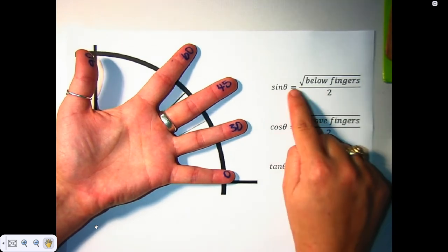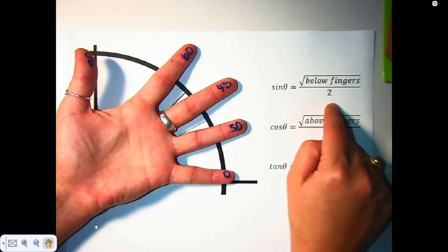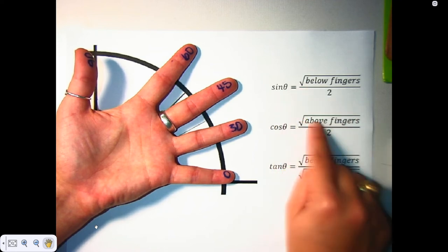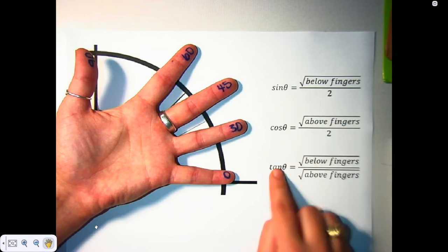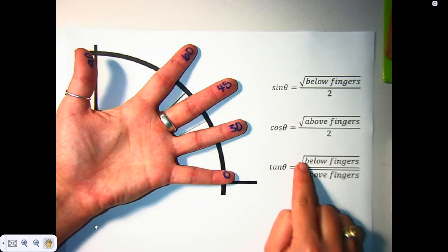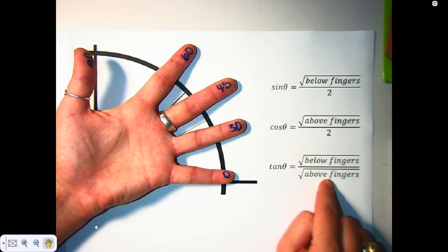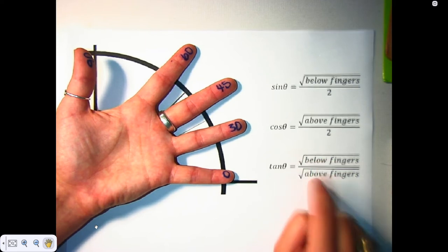For sine, you want to take the square root of the fingers below your reference angle divided by 2. Cosine is the square root of the fingers above your reference angle divided by 2. And tangent, since tangent is sine divided by cosine, you're going to do the below fingers divided by the above fingers, which is below is sine, above is cosine.